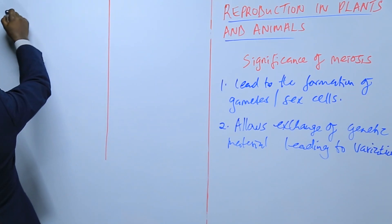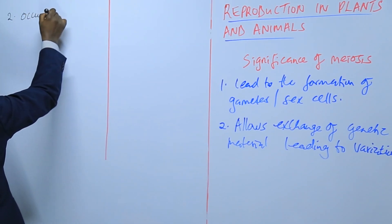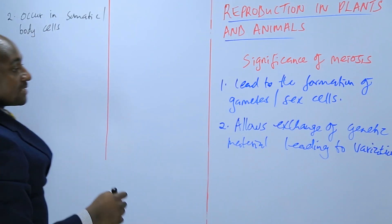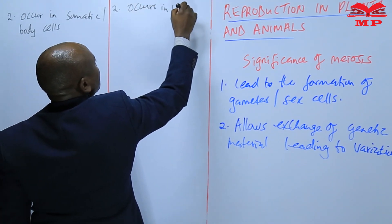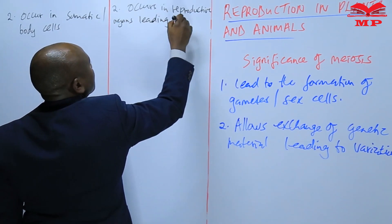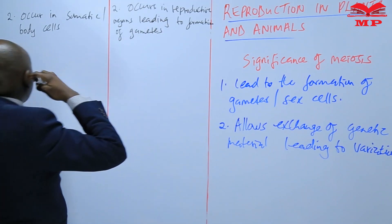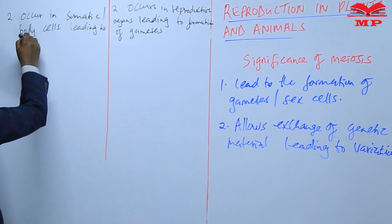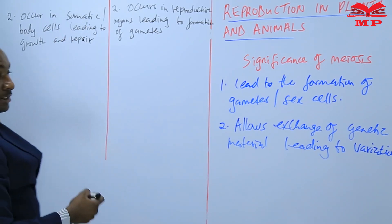Number two: mitosis occurs in somatic cells, also known as body cells, leading to growth and repair. But in meiosis, this occurs in reproductive organs, leading to formation of gametes.